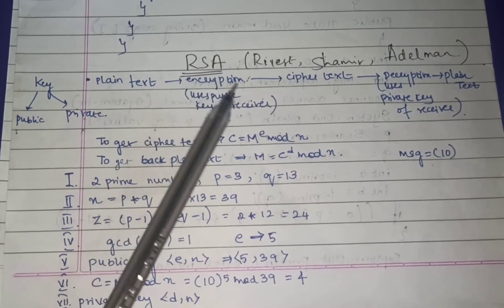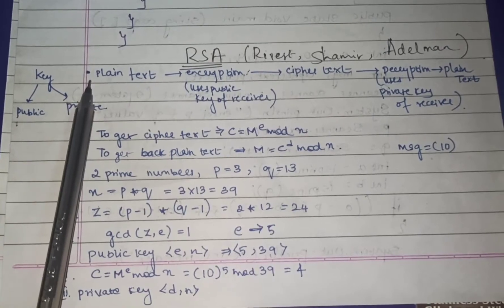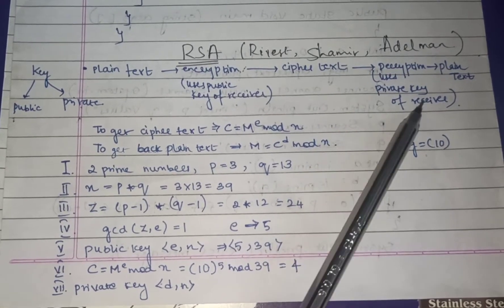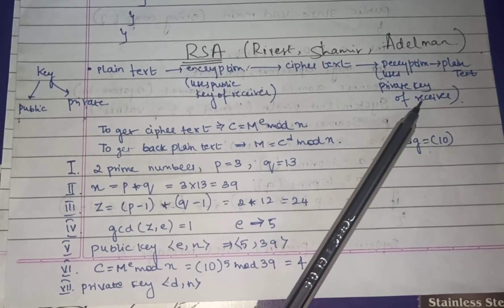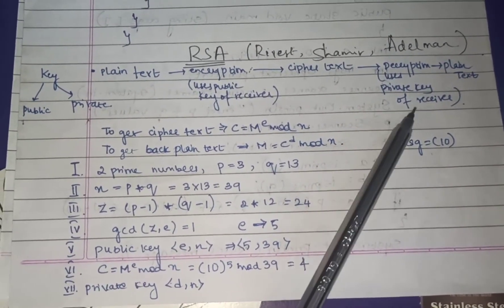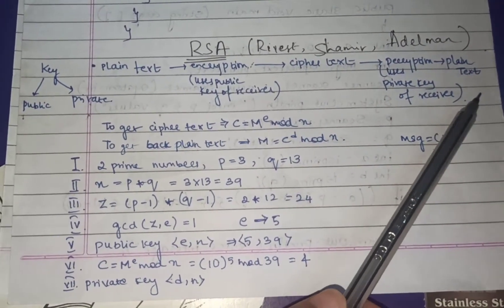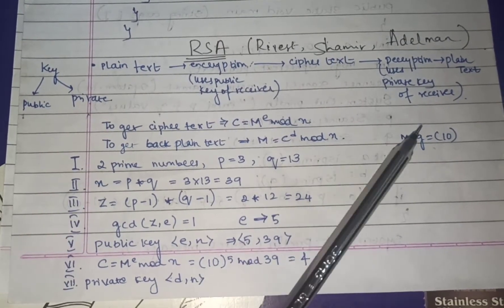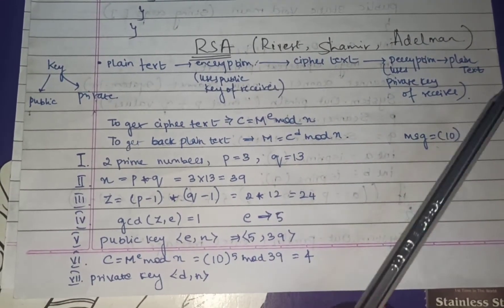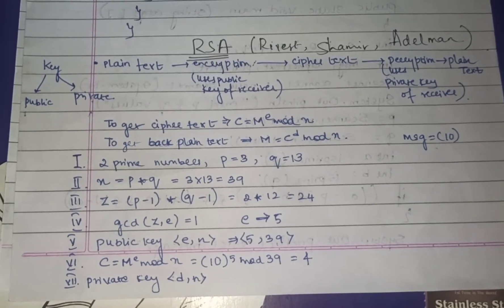After encrypting, the plain text is called ciphertext — this is the encoded part of the plain text. Before the receiver gets the message, decryption takes place using the private key of the receiver, so the receiver obtains the original plain text. The receiver cannot understand the ciphertext, so a decryption step is necessary.